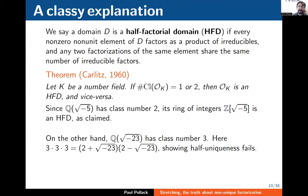Domains with this property have a name and are studied in certain segments of the commutative algebra community. The main goal of this talk is to advertise what some of these commutative algebraists are thinking about to the wider number theory community, because I think there could be greater penetration of these ideas. A domain is a half-factorial domain (HFD) if every non-zero non-unit can be written as a product of irreducibles, and any two factorizations of the same element have the same number of irreducible factors.